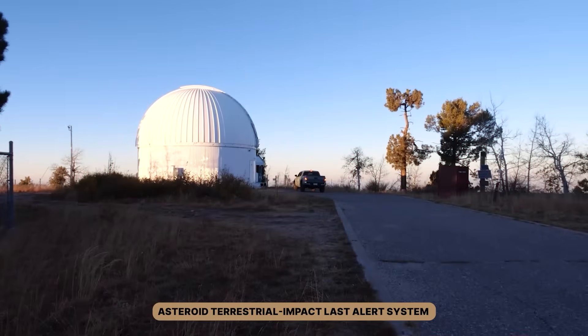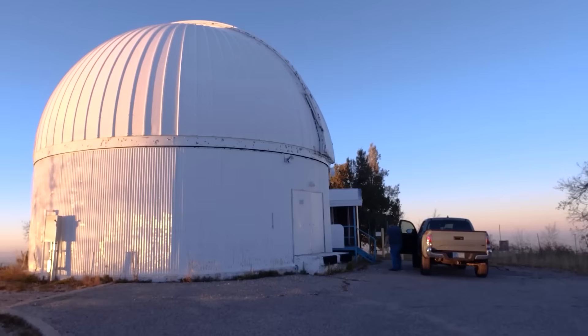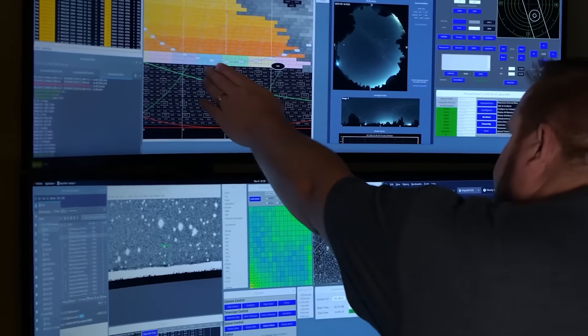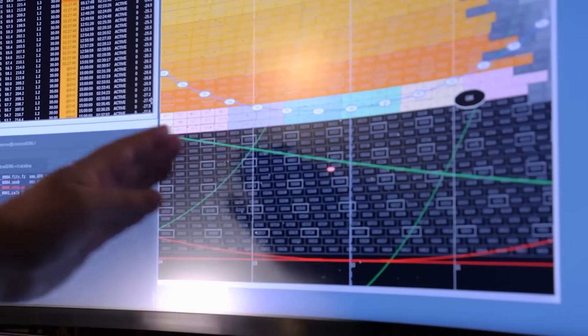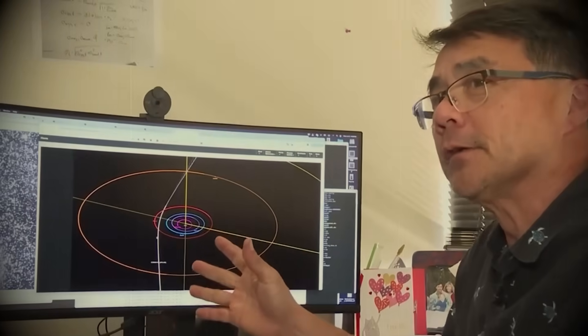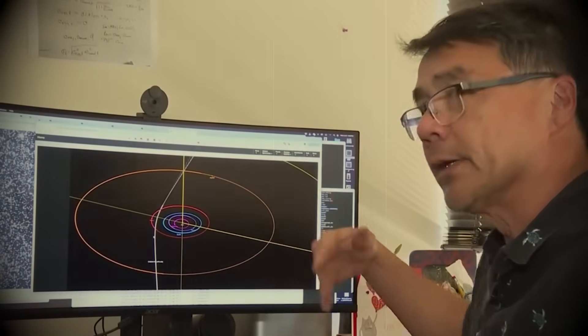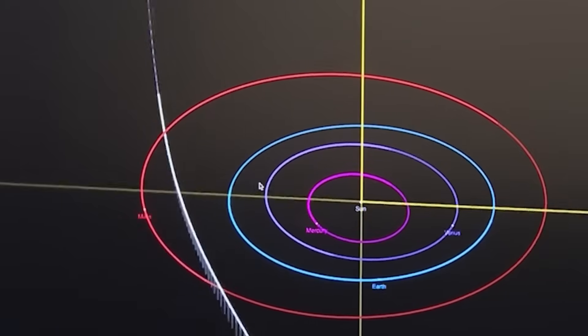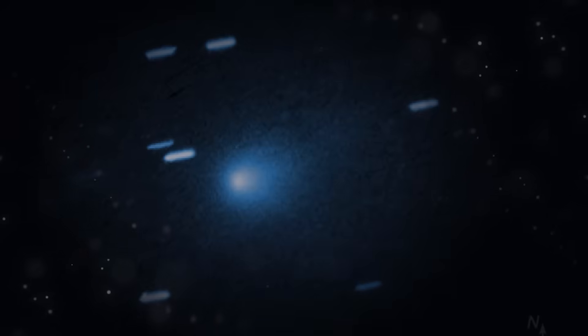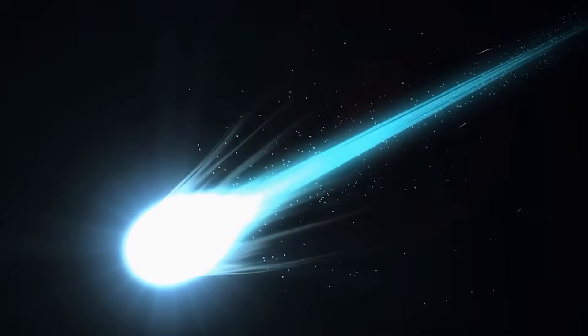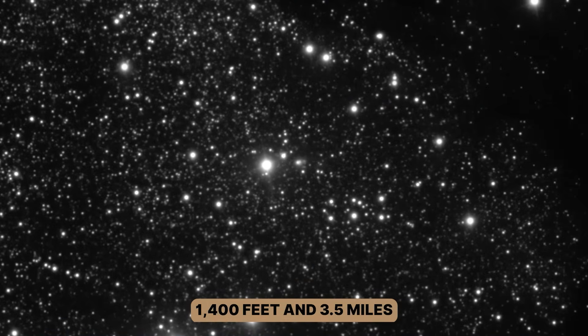The Asteroid Terrestrial Impact Last Alert System telescope in Chile first spotted this visitor on July 1st, 2025. Within weeks, scientists confirmed what the orbital calculations were screaming at them. This object came from another star system entirely, traveling on a hyperbolic path that meant it would never be captured by our sun's gravity. It was just passing through, a brief tourist in our corner of the galaxy. But unlike Oumuamua, which remained largely inert and silent, 3I Atlas immediately started showing signs of life. When Hubble first photographed it in late July, astronomers could already see a teardrop-shaped dust cloud forming around its nucleus.